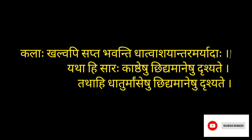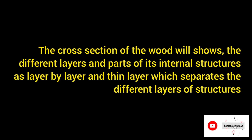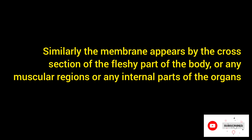The cross section of wood shows the different layers and parts of its internal structures, layer by layer, with a thin layer separating each. Similarly, a membrane appears upon the cross section of the fleshy part of the body, any muscular regions, or any internal parts of the organs.